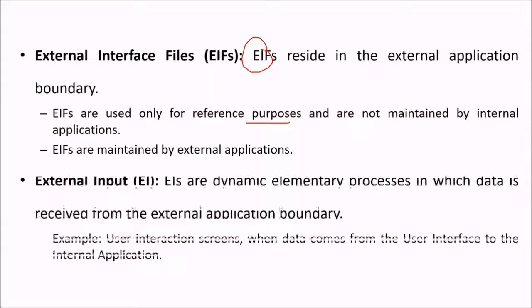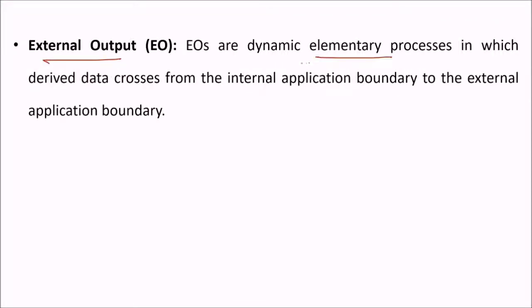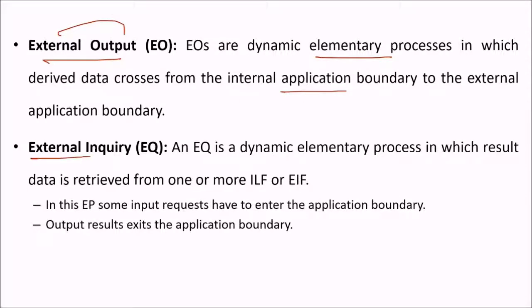EI — external input — are dynamic elementary processes in which data is received from the external application boundary; for example, a user interaction screen where data comes from the user to the internal application. EO — external output — are dynamic elementary processes where data crosses from the internal application boundary to the external application boundary. EQ — external inquiry — is a dynamic elementary process in which result data is received from one or more ILF and EIF; input requests enter the application boundary and output results exit the application boundary.